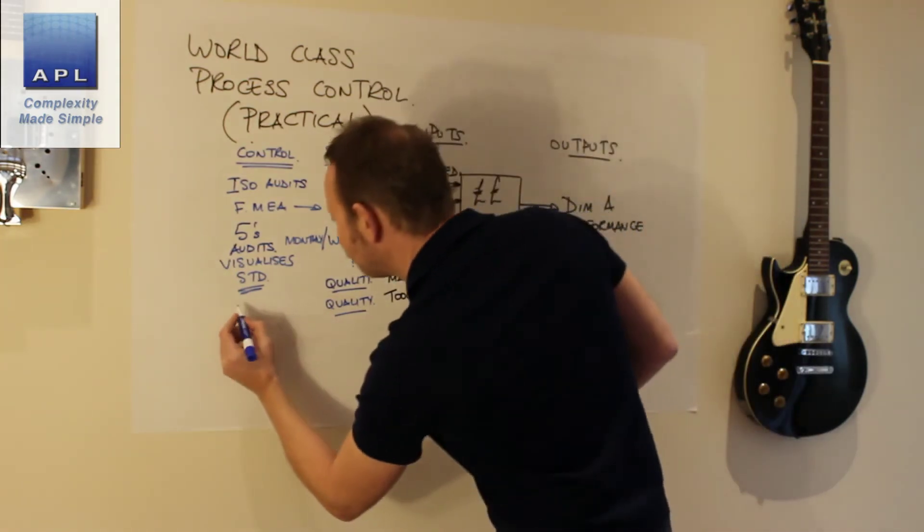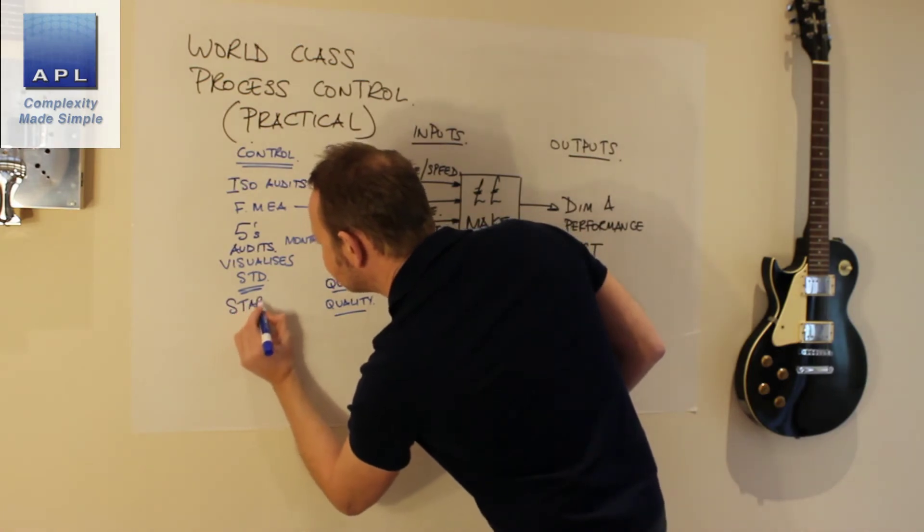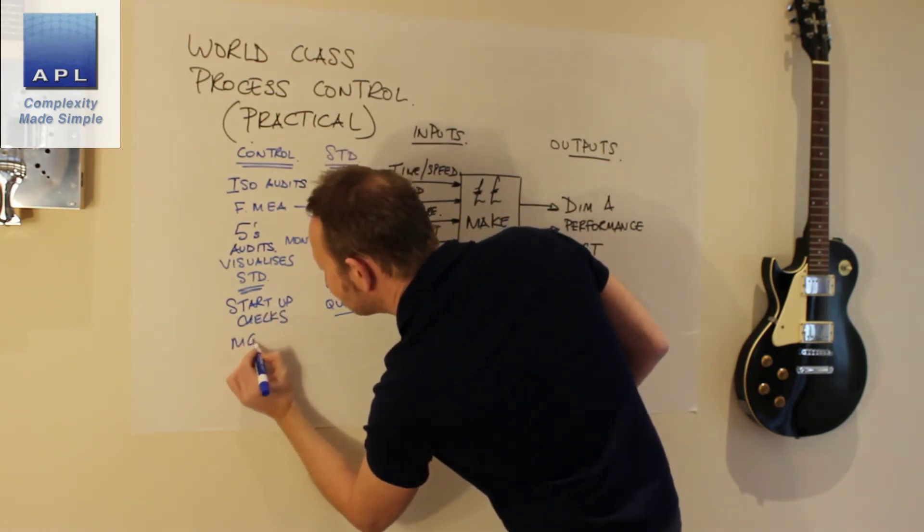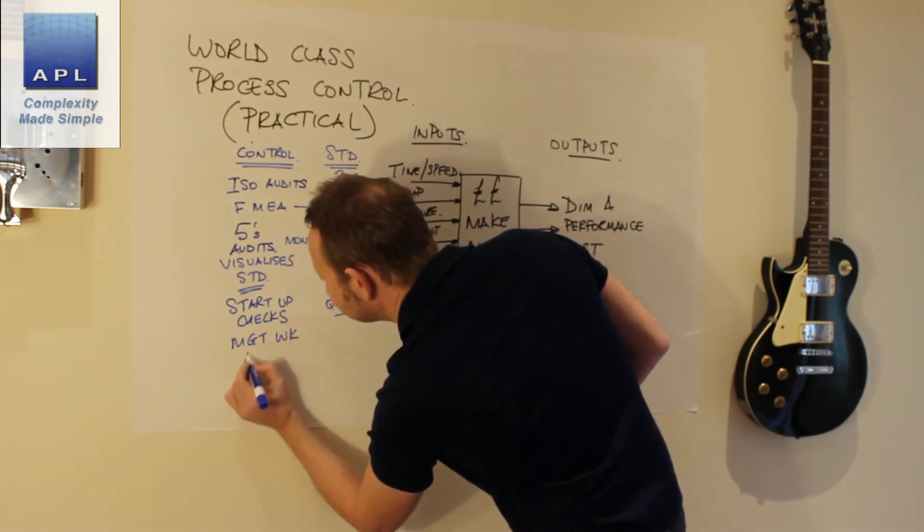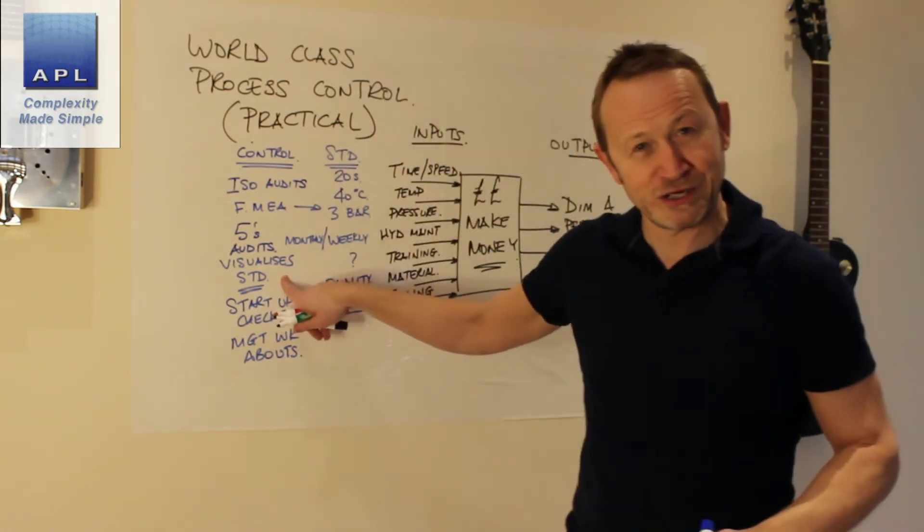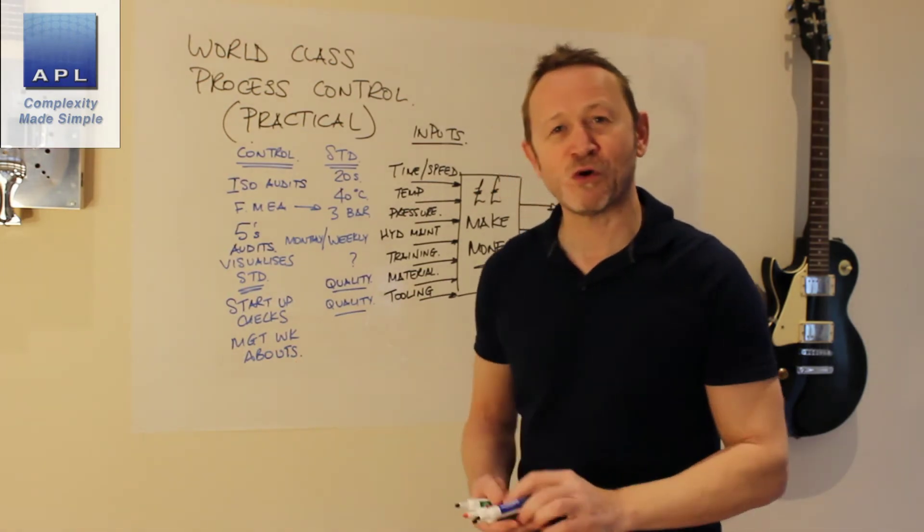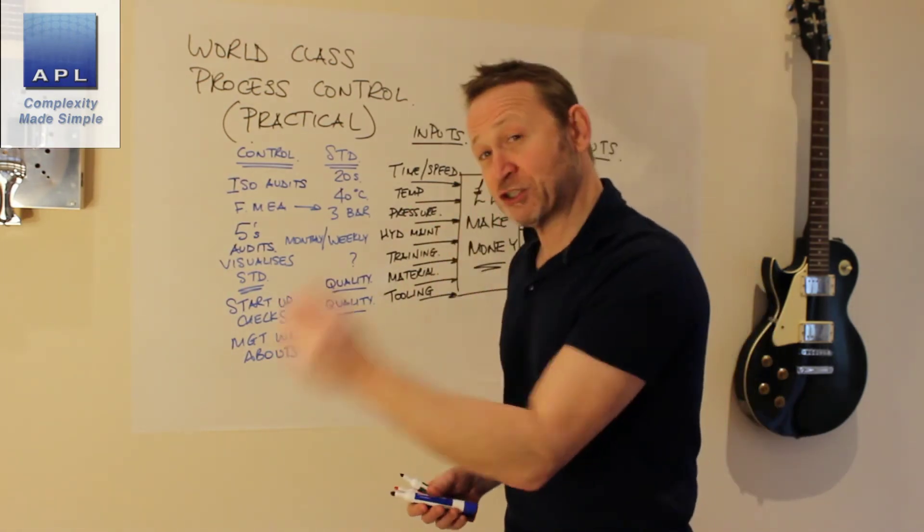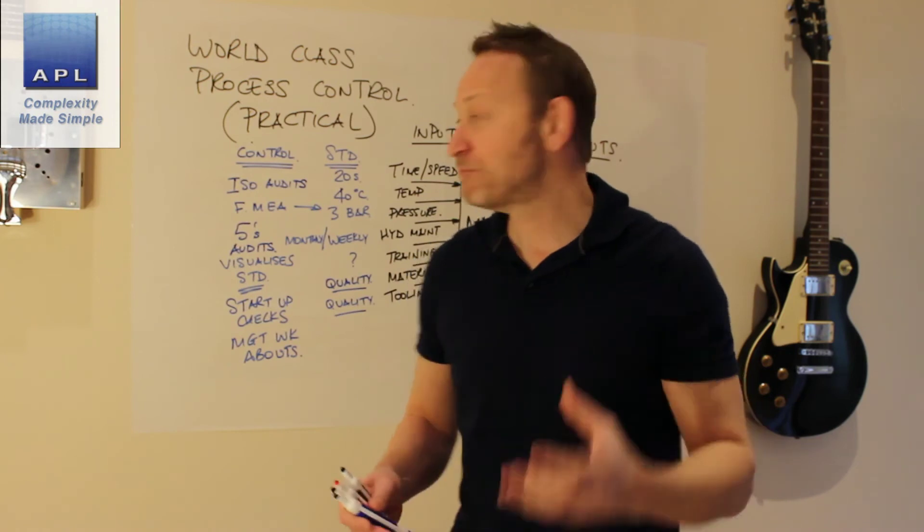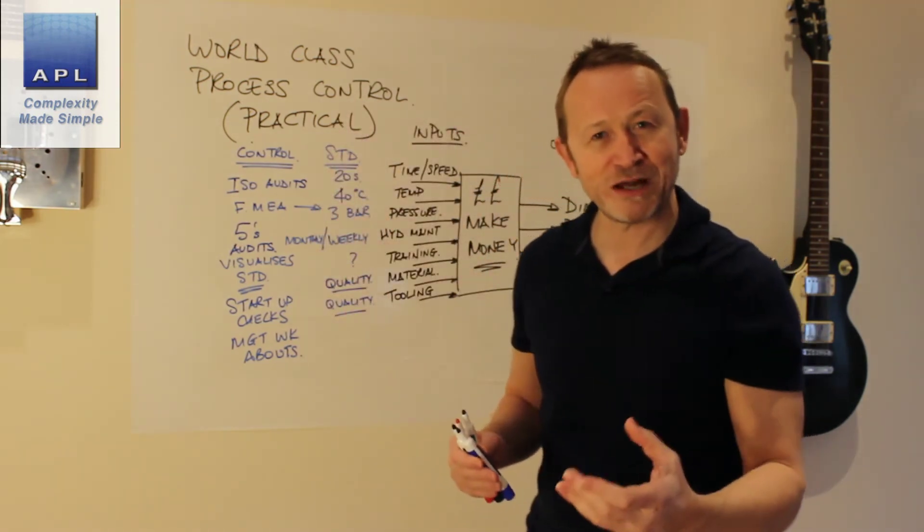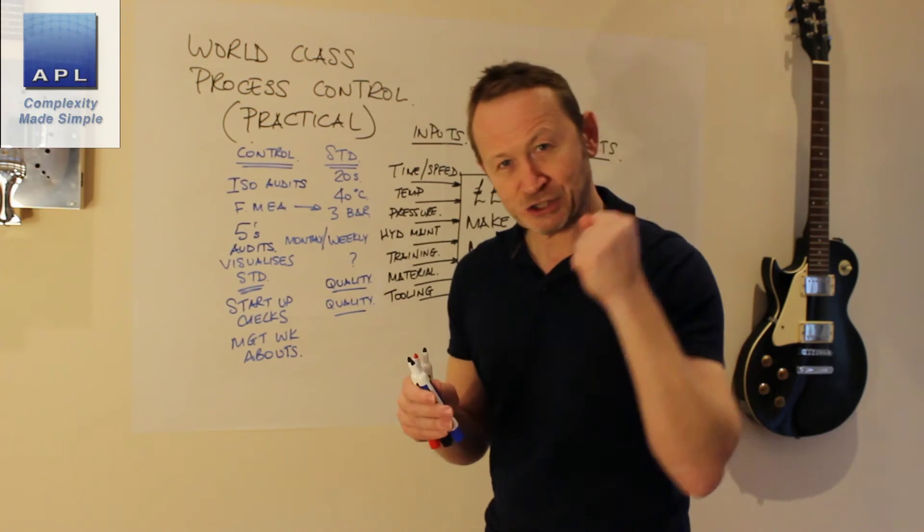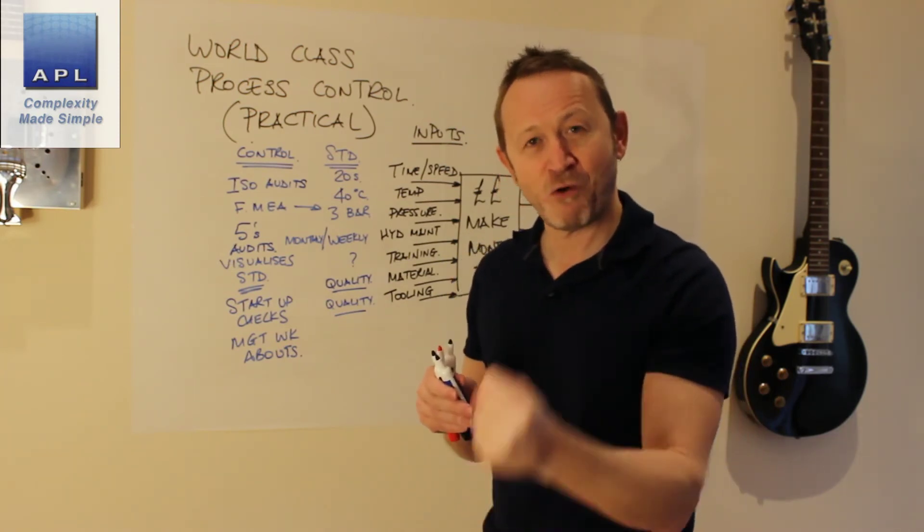What else? Start-up checks, start-up routines. What else? Management walkabouts. At the end of the day, if you visualize an abnormality, then the management regularly walk the floor. The role of the management is when they see an abnormality, they make sure that the abnormality is put right. They make sure that these standards, the senior management are the advocates of the rules. And if the rules are broken, they stop people and they make them go back to the standard.